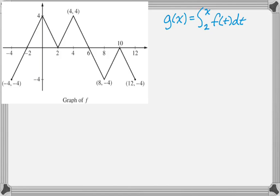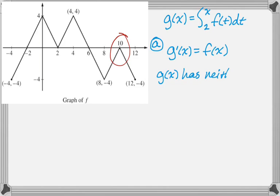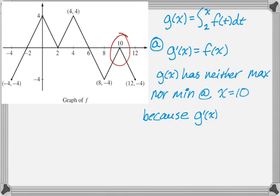So the first question, does g have a max, min, or neither at x equals 10? The first thing I would do is make clear that I understand that g prime of x is f of x. So we have that, and then if you look at the graph, there's 10, and you can see that f of x does not have a sign change there, which means that g of x doesn't have a max or a min. Again, g of x does actually have a point of inflection, but you're not asked anything about that, so don't bother talking about it. So g of x has neither max nor min at x equals 10 because g prime of x does not have a sign change.